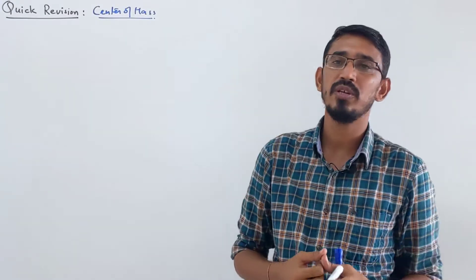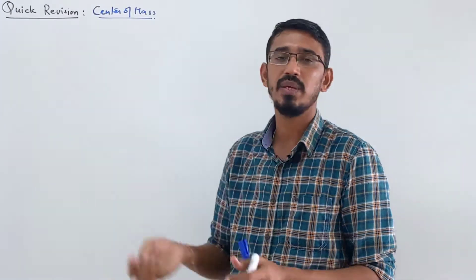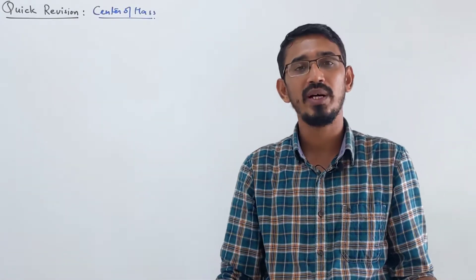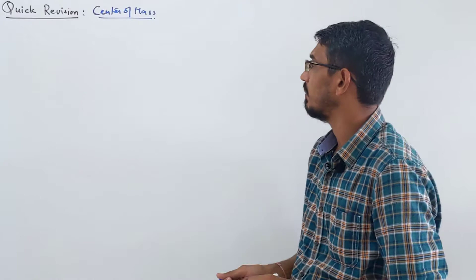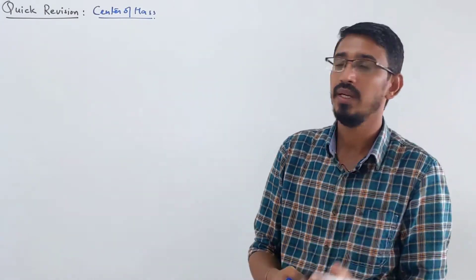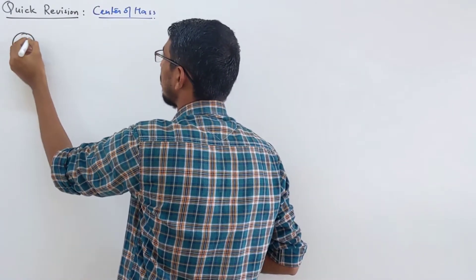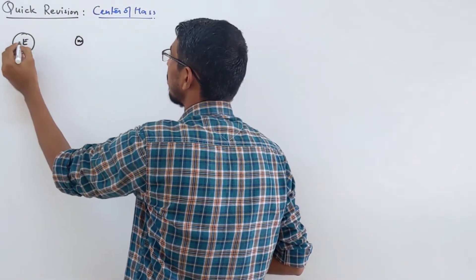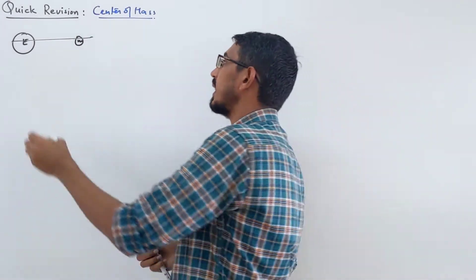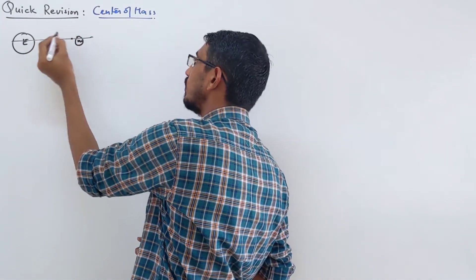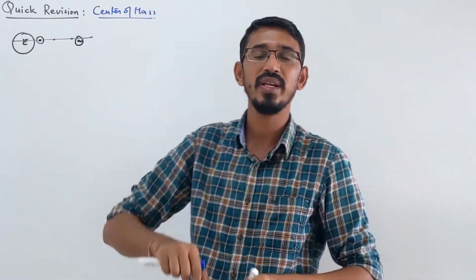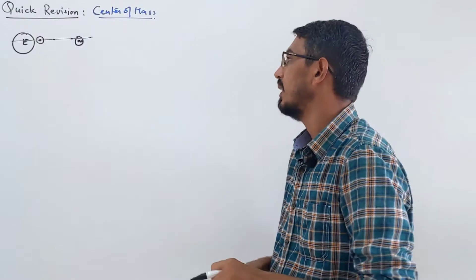We have learned many properties of center of mass — like center of mass may be inside the body or outside the body. At center of mass, there may be real mass or no mass. We learned that center of mass is always towards the heavier side of the body. Suppose this is your earth and this is your moon. Where does the center of mass of this earth-moon system lie? It will be close to the earth — center of mass is always close to the heavier part.